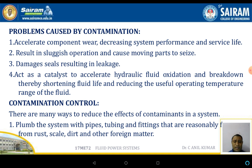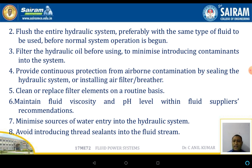For contamination control, there are many ways to reduce its effect. Plumb the system with pipes, tubings, and fittings that are free from rust, scale, dirt, and other foreign matter. Flush the entire hydraulic system, preferably with the same type of fluid to be used, before normal system operation begins. This is similar to flushing chemical laboratory equipment before use. Hydraulic oils should also be filtered before use to minimize introducing contaminants into the system.